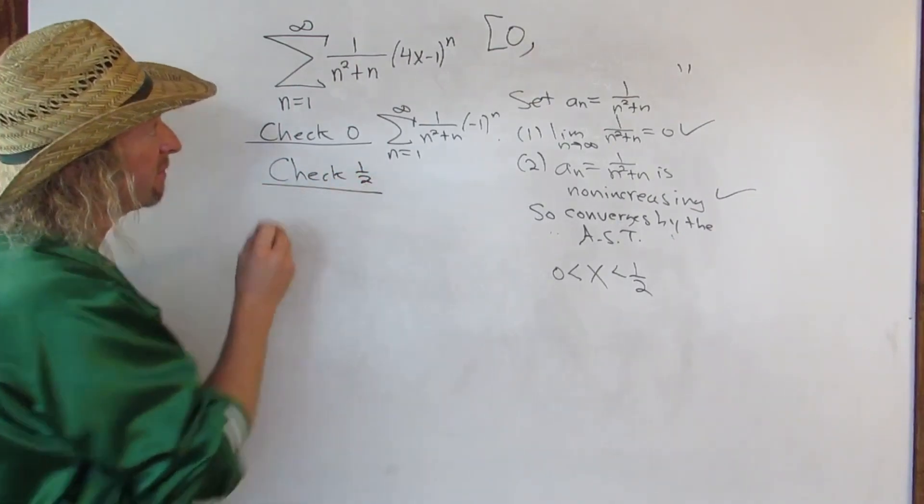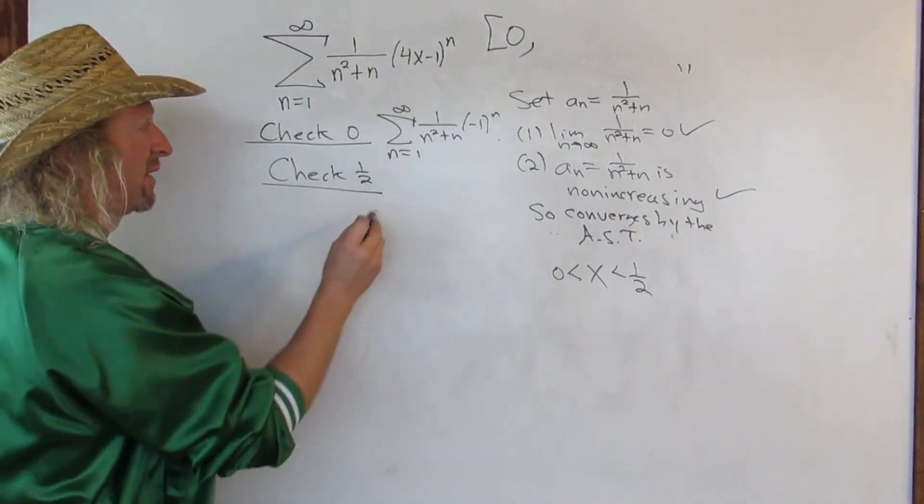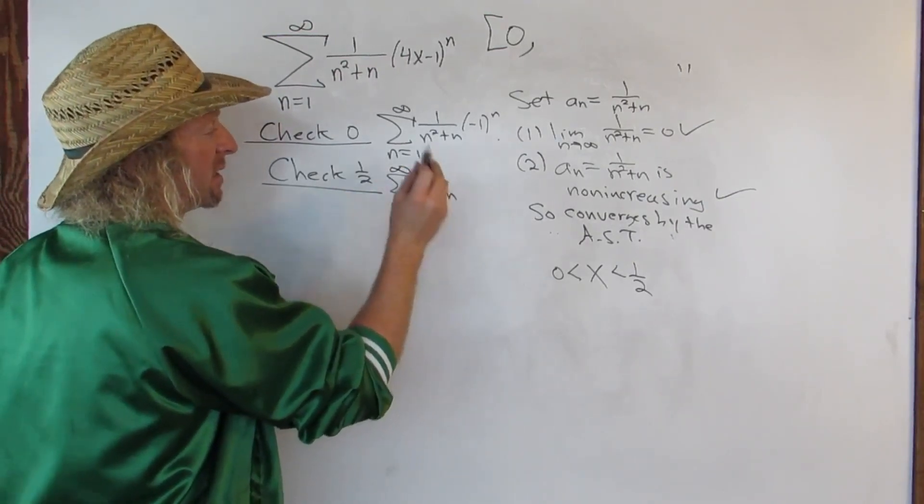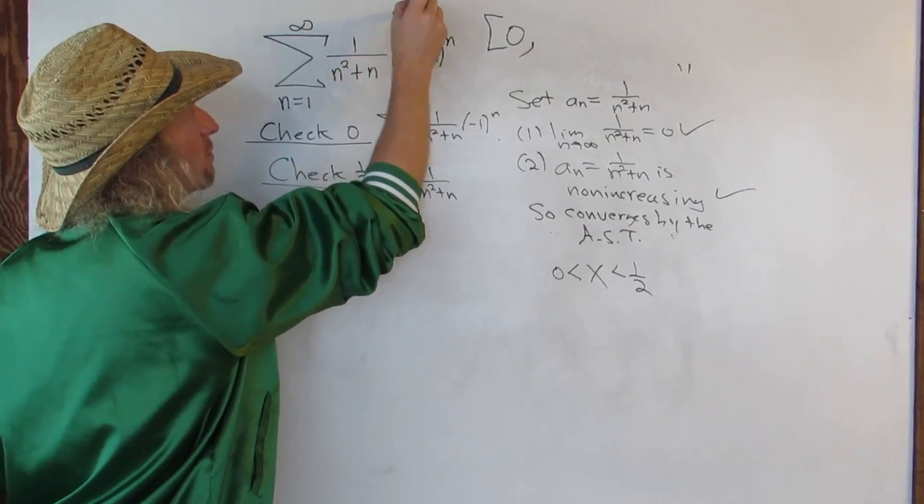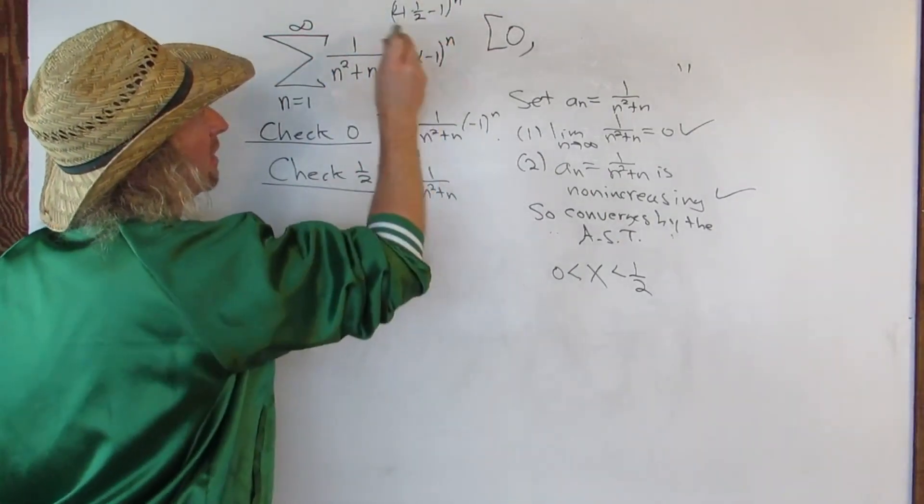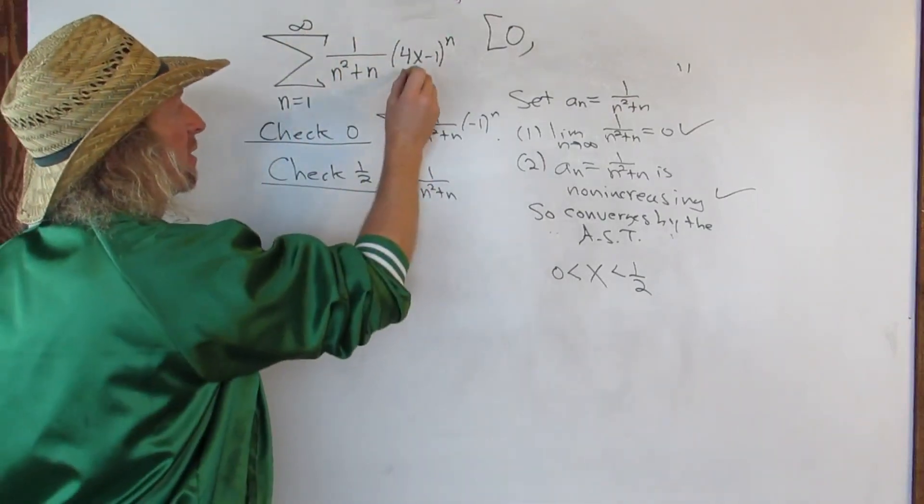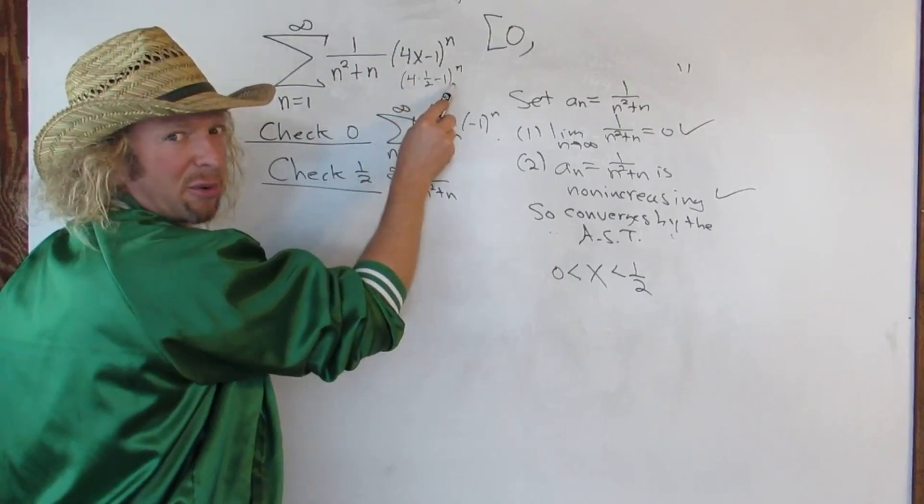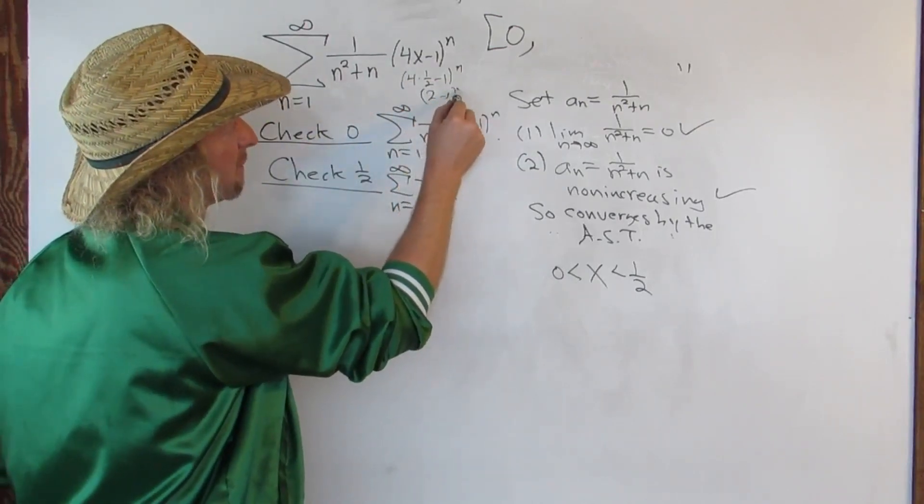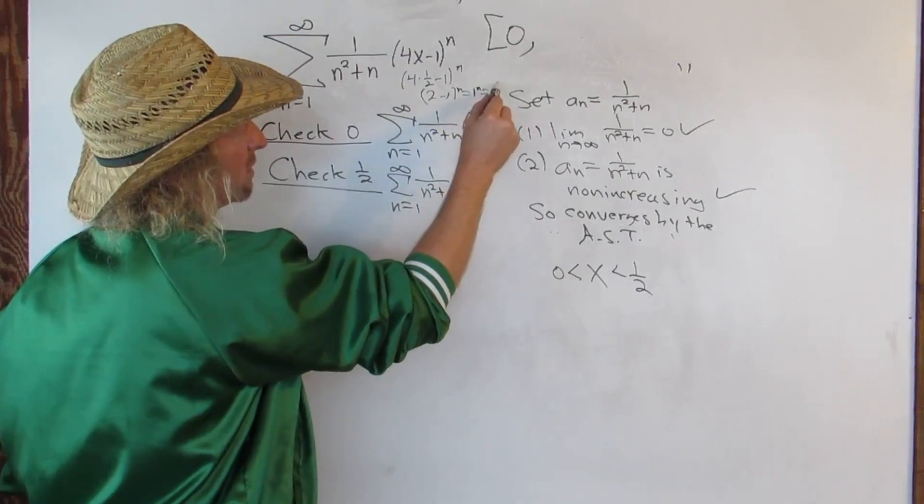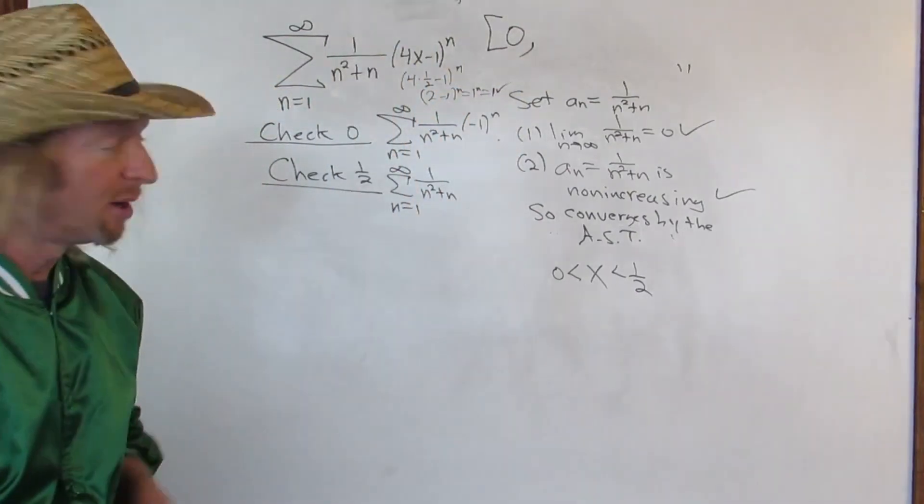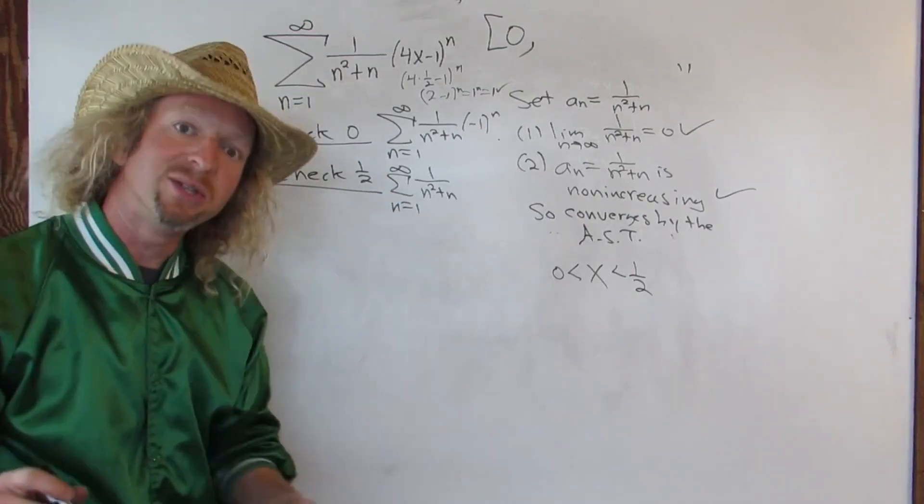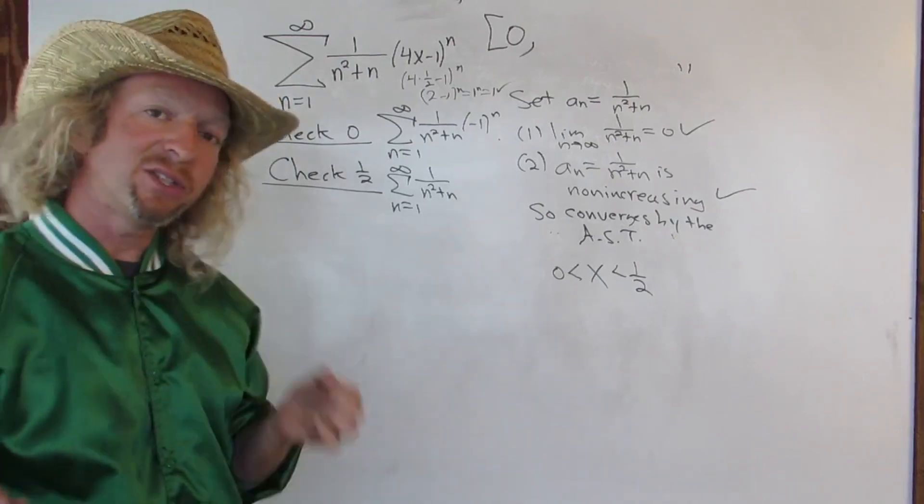I'm going to put a 1 half in here. So we have infinite sum, n equals 1 to infinity, 1 over n squared plus n. Let's see. When you put a 1 half here, you get 4 times 1 half minus 1 to the n. I don't know if you can see that high. So let me do it down here. You have 4 times 1 half minus 1 to the n. So 2 minus 1. 4 over 2 is 2. So 2 minus 1 to the n. So 1 to the n is 1. So it goes away. So it just completely goes away. So you have this. This is going to converge as well. You can do it a couple ways. You can use limit comparison or you can use direct comparison. Let's use direct comparison.